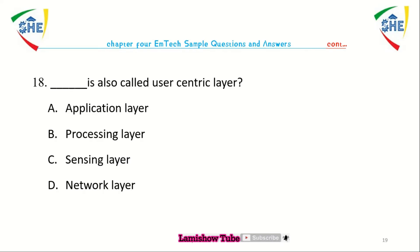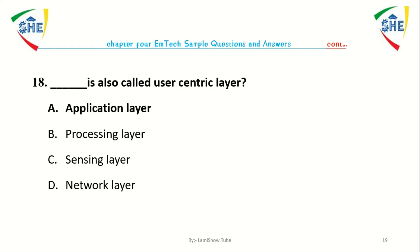Question number eighteen: Dash is also called the user-centric layer. A. Application layer, B. Processing layer, C. Sensing layer, D. Network layer.